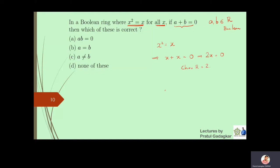Since x + x = 0 in a Boolean ring, if a + b = 0, this zero can also be written as a + a, because a + a = 0 by the characteristic-2 property. Therefore, canceling a from the left using the left cancellation law, we get b = a. So we can conclude that b must equal a, and this is the correct option. With this, the video ends.